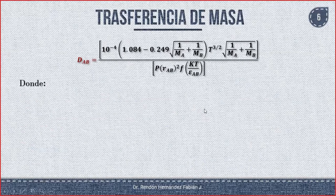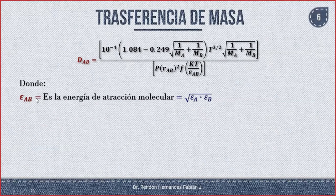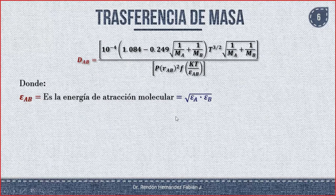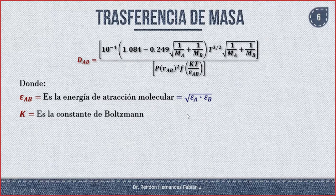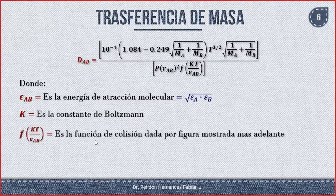Aún falta definir la función Ω. El ε_AB es la energía de atracción molecular y es igual a la raíz de ε_A por ε_B. K es la constante de Boltzmann. Esta expresión completa es la función de colisión y está dada por la siguiente figura.